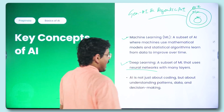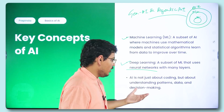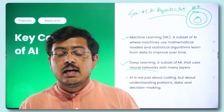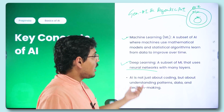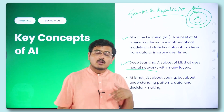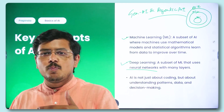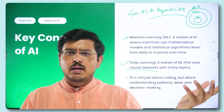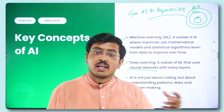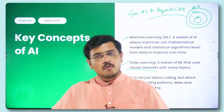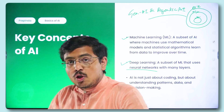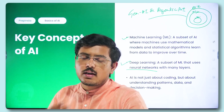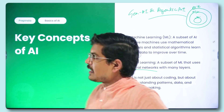AI is not just about coding — it's about understanding patterns, data, and decision-making. It is about understanding the problem, how data can help solve it, and how a machine can take decisions without human intervention to improve results. For example, a disease detector should take less time than existing methods to create actual real-world impact.